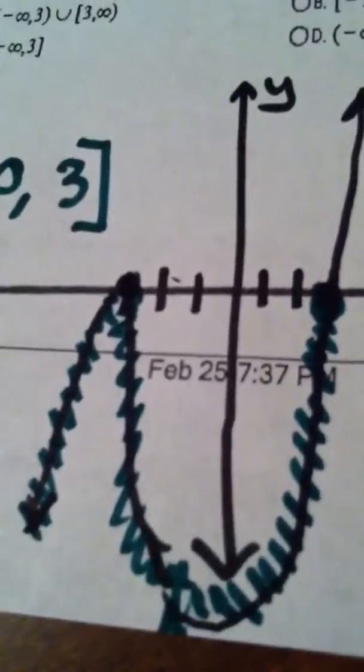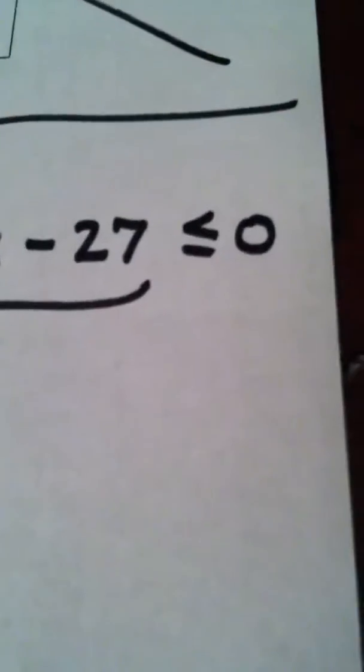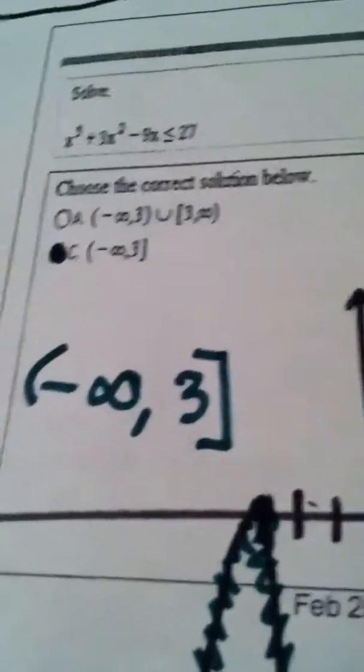And then read your answer from your graph. And to decide whether or not the zeros are included, it depends on whether there was an equal in the original problem or not, in the original inequality. And we're done.